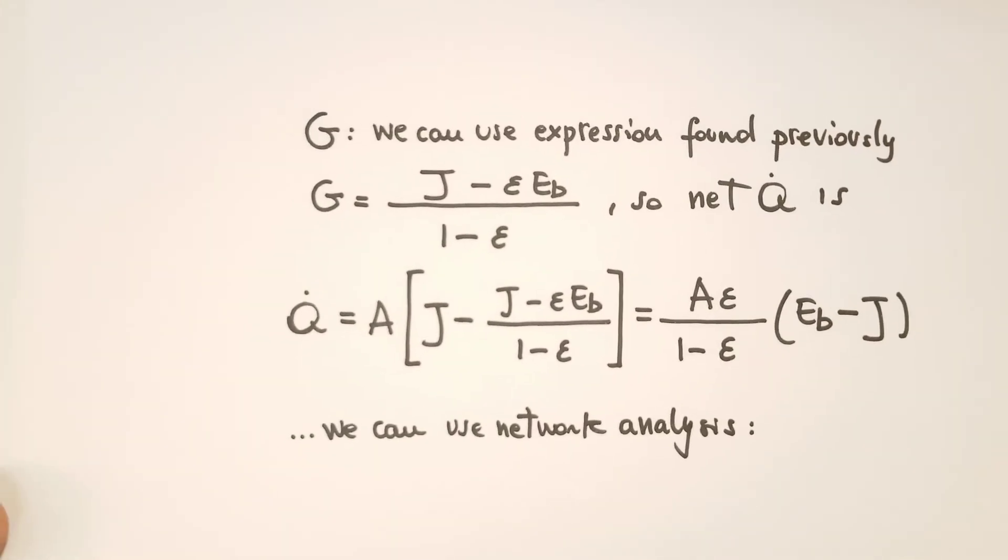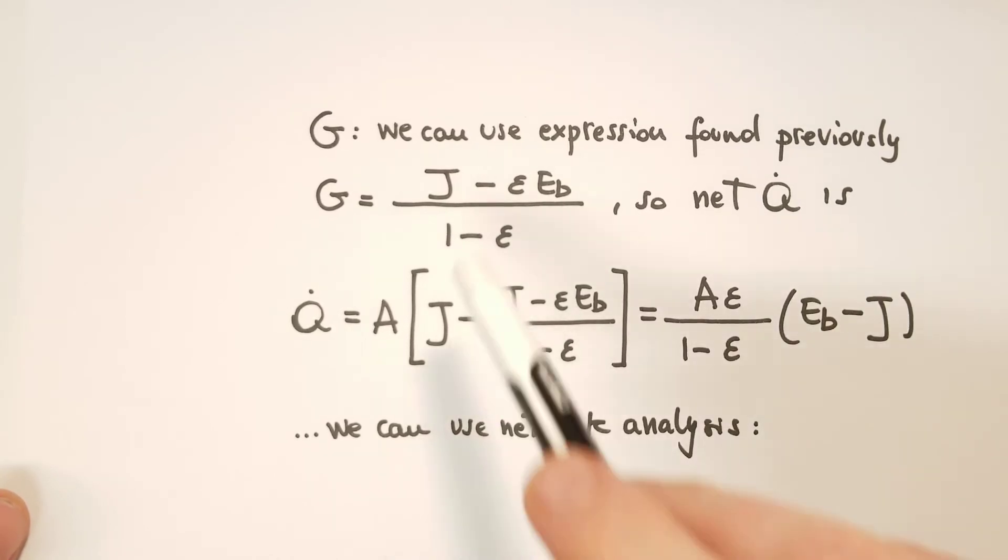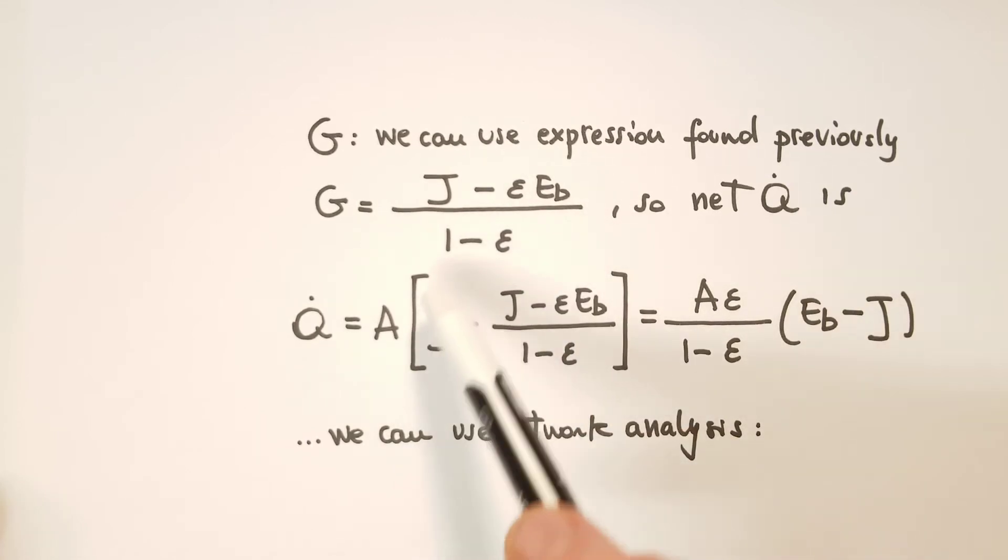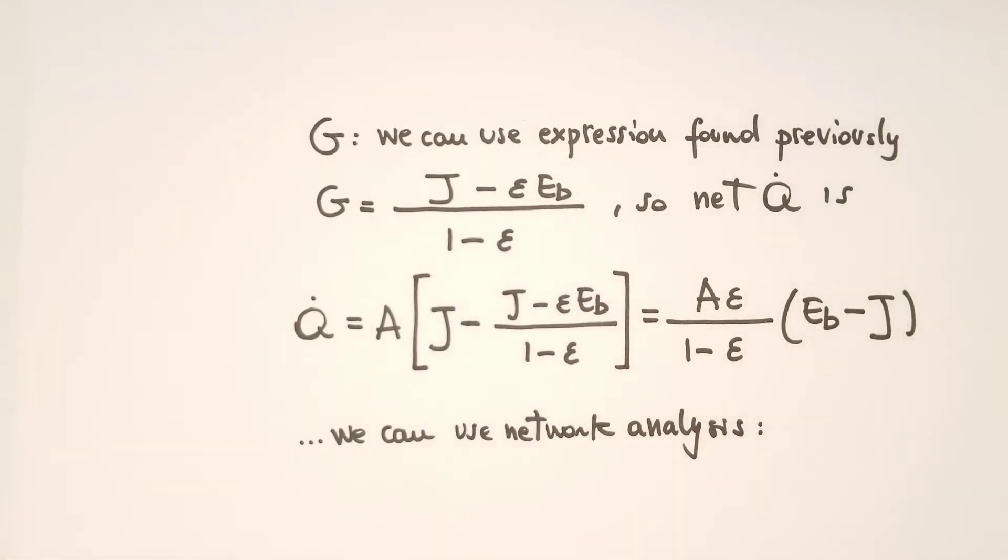What is G? G, the incident radiation, written in terms of the radiosity J. G equals J minus εEb divided by 1 minus ε. So if we substitute in the expression for the net radiation exchange between the two surfaces, Q is equal to A that multiplies J minus the ratio between J minus εEb divided by 1 minus ε. So at the end, we reach this neat expression.